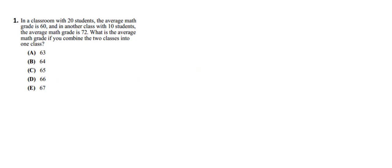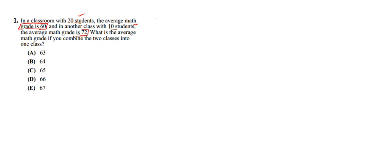In our first sum, we have a classroom with 20 students where the average math grade is 60, and in another class with 10 students the average math grade is 72. So we are talking about two different classes with 20 and 10 students respectively. The question is: what is the average math grade if you combine the two classes into one?